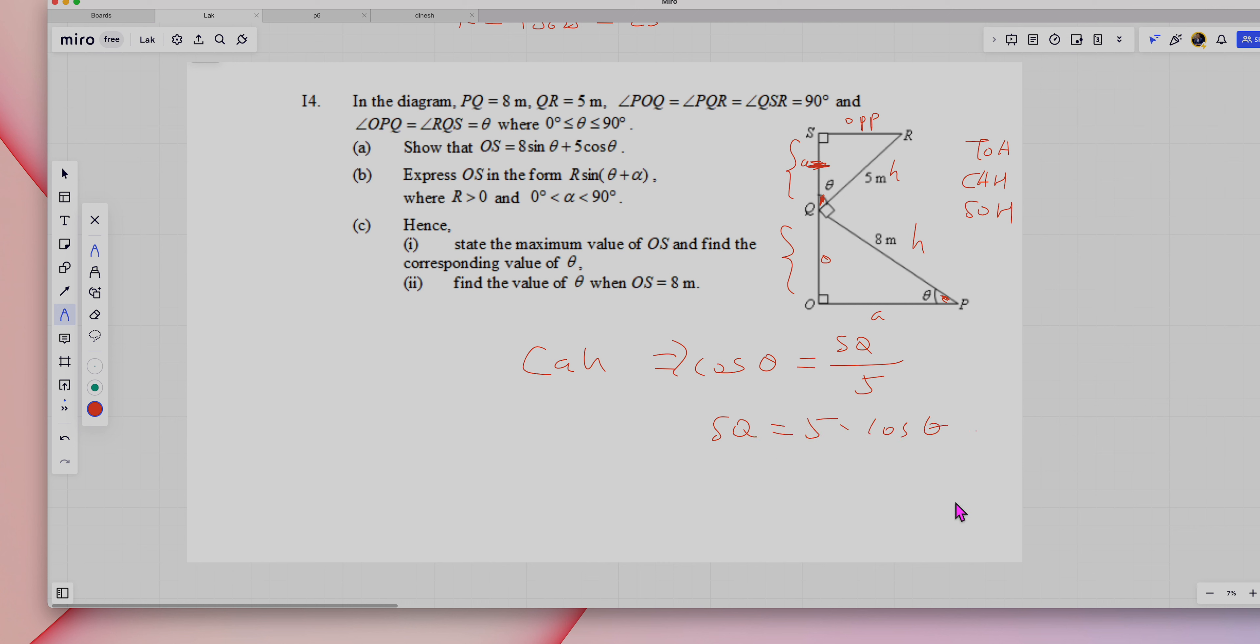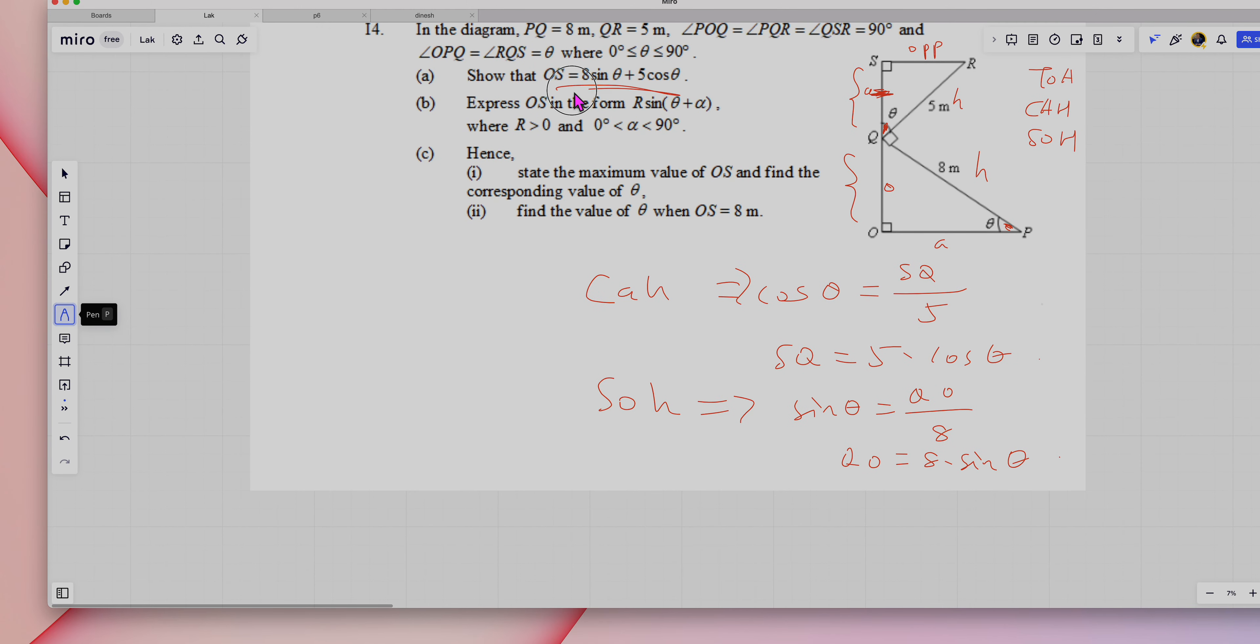Next, you need to figure out QO, which is O, so it's SOH. Sine theta equals opposite QO over H, which is 8. So QO equals 8 times sine theta. Just add this together, then you get this. That's how you show it.